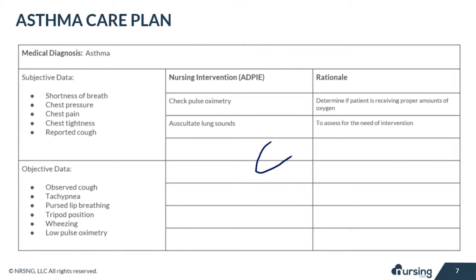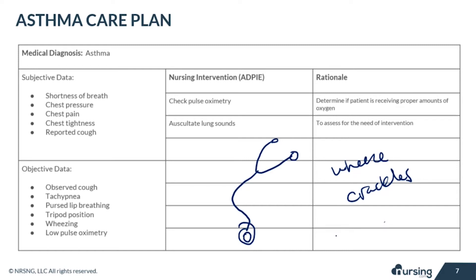Next, you want to listen to the patient's lung sounds so that you can listen for any signs of needing an intervention. For example, if they're having some wheezing, they might need a bronchodilator. If you're hearing some crackles or ronchi, they might have pneumonia and could potentially need suctioning. Something important to remember is that just because the wheeze goes away doesn't necessarily mean the patient is getting better — it could mean that airway has gotten even tighter, meaning no air is really getting through. So that's why you're not hearing the wheeze. Always check the pulse ox.